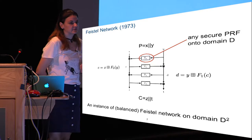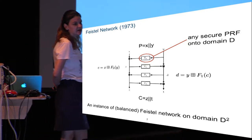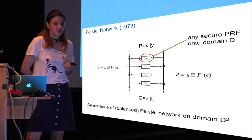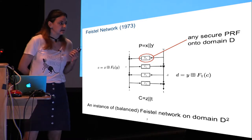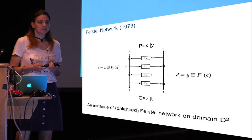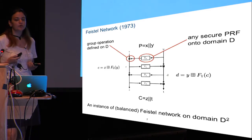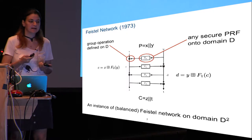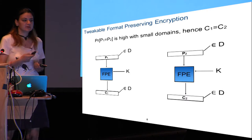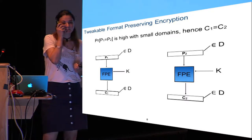Let's look at the Feistel network, which is a widely known iterative cipher invented by Dr. Feistel at IBM in the early 1970s. Each iteration is called a round. Here we see an instance of a Feistel network with four rounds. Each round consists of a secure round function — typically a secure PRF — and a group operation defined on a domain.